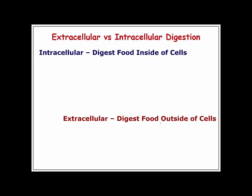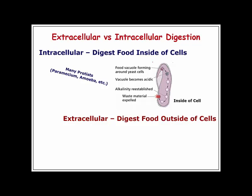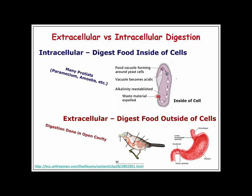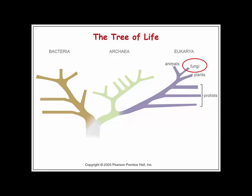Intracellular digestion is where food is digested on the inside of cells, and extracellular digestion is where food is digested on the outside of cells. Protists like paramecium have intracellular digestion. In animals, certain cells are capable of intracellular digestion, but we don't use that to digest our food — we use an extracellular process, holding the food inside a cavity. In fungi, this is done differently.